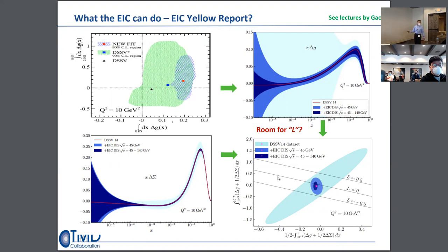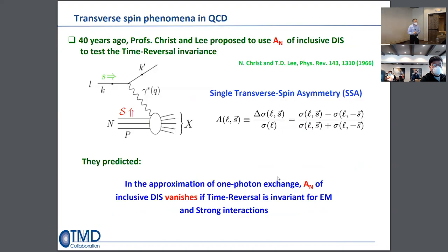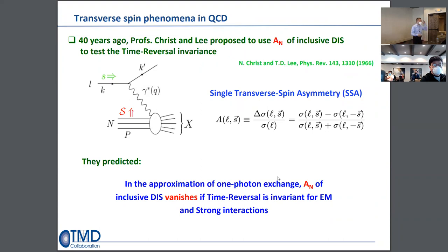So the longitudinal spin program uses spin as a tool to understand where proton spin comes from. We have some knowledge of quark helicity and gluon helicity contributions, but there is still a lot of room to understand orbital angular momentum contributions. Now I turn to transverse spin phenomena: with a transversely polarized beam, I told you A_L (single spin, longitudinal) is zero in QCD, but A_N (transverse single spin asymmetry) is not zero.